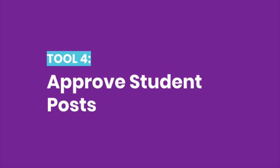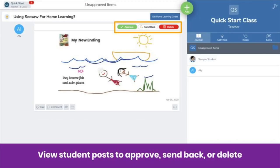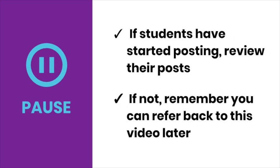Keep in mind that all student posts are approved by you, the teacher, before they're added to the class journal. Here's how the approval flow works: when students submit a post, you will see a red bar on the bottom of your screen. Click 'Review' — you will see all posts that need approval. You can click on a post to view it, then decide if you want to approve, send back, or delete it. Pause the video now. If students have already started posting, approve their posts. If not, remember you can always refer back to this video later.